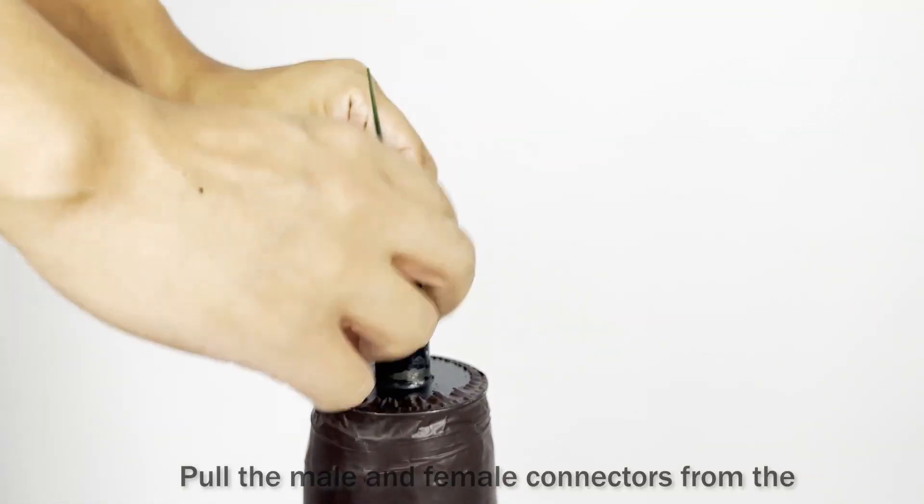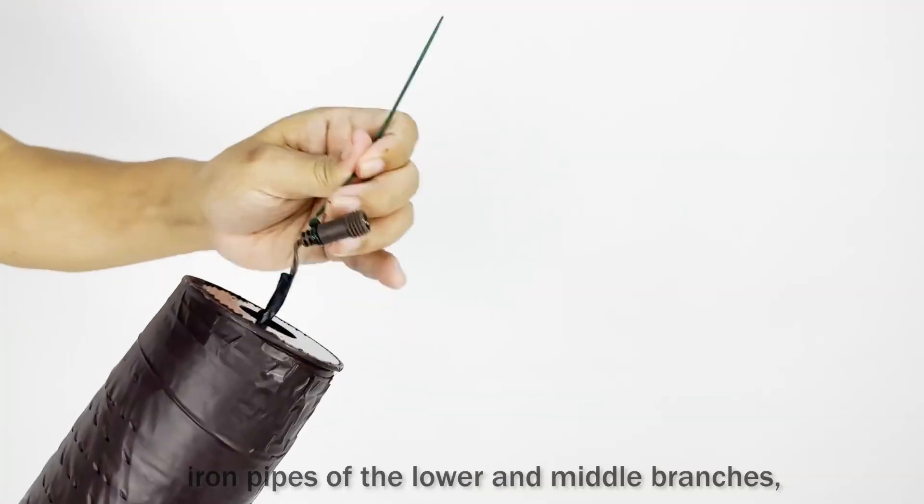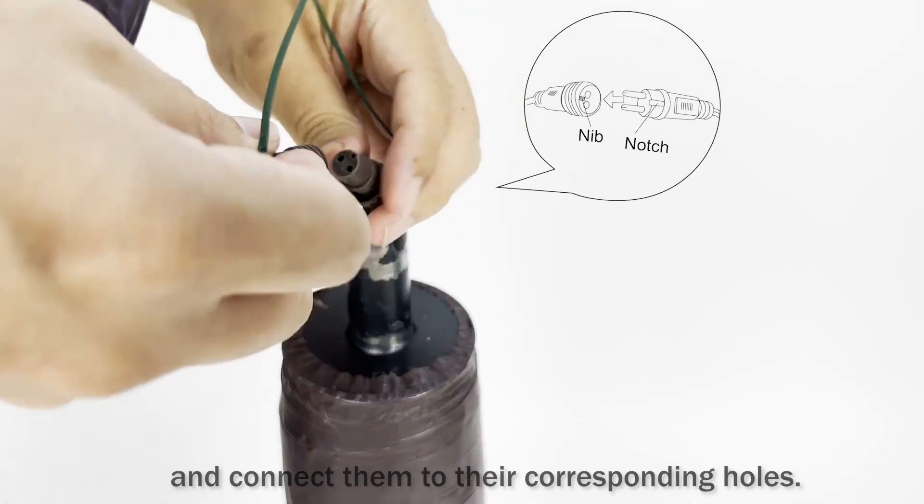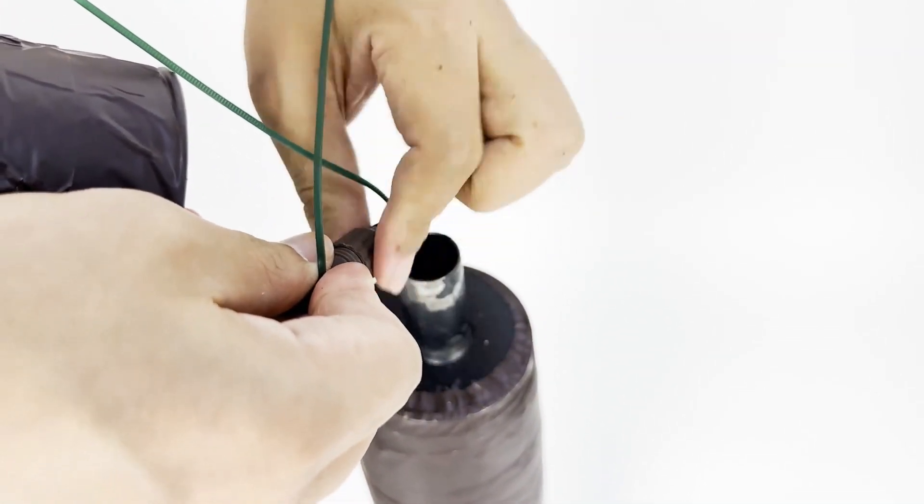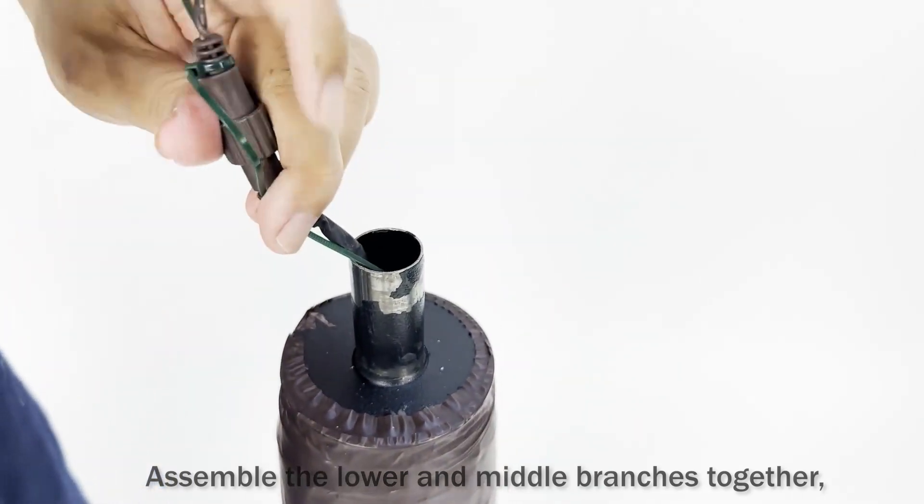Pull the male and female connectors from the iron pipes of the lower and middle branches and connect them to their corresponding holes. Assemble the lower and middle branches together.